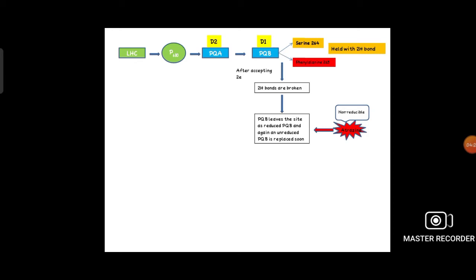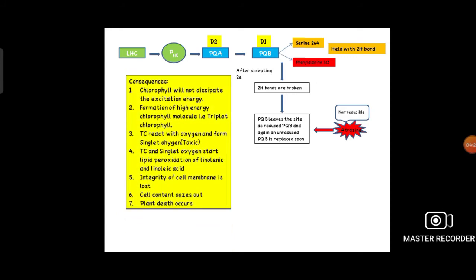The major consequences will occur: the chlorophyll will not dissipate the excitation energy. Whatever excitation energy was dissipated by the chlorophyll molecule will now not dissipate, and that energy will be reabsorbed by the chlorophyll molecule, forming high-energy chlorophyll molecule, that is triplet chlorophyll.